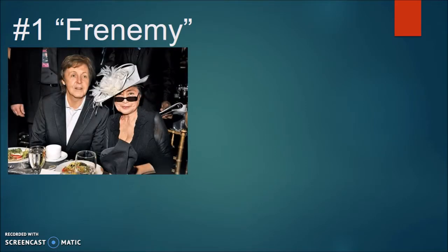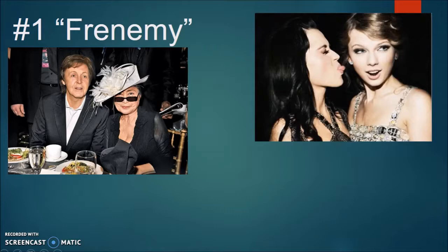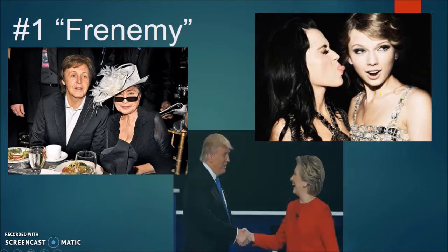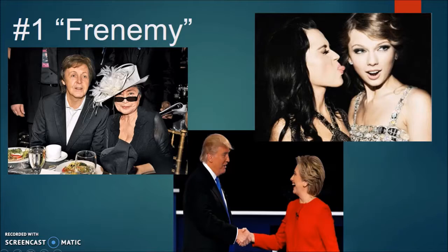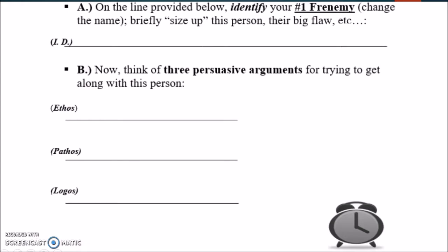Here are some examples from popular culture: Paul McCartney and Yoko Ono, who is rumored to have caused the breakup of the Beatles; Taylor Swift and Katy Perry, who have a highly publicized feud; and our political opponents from the 2016 election, who had a very public feud but here we have an image of them being nice to each other. So as an example, we're going to go through how, if a student had the topic of their number one frenemy, how they would go about crafting arguments.